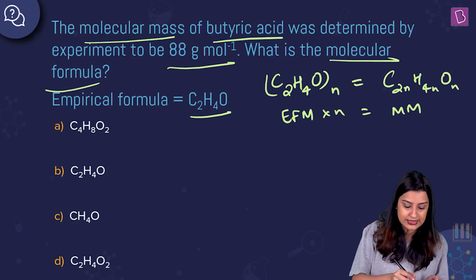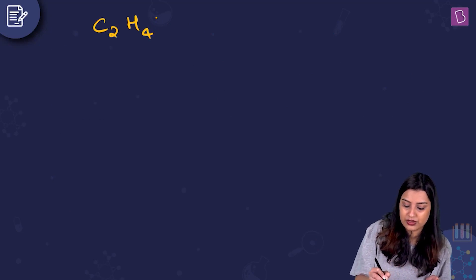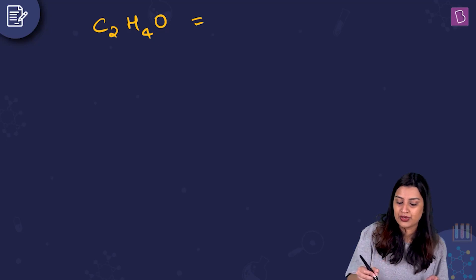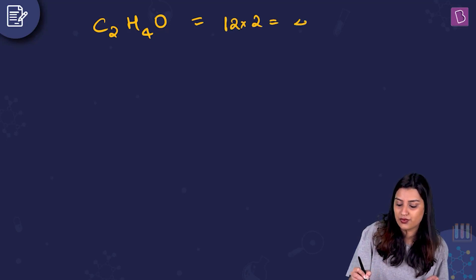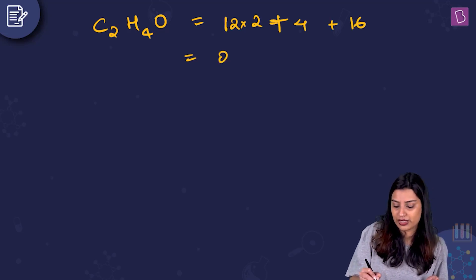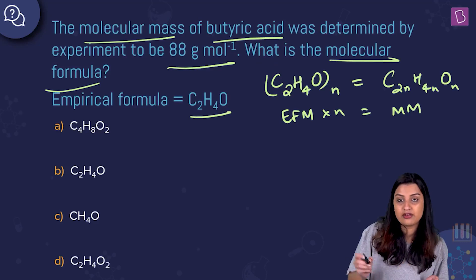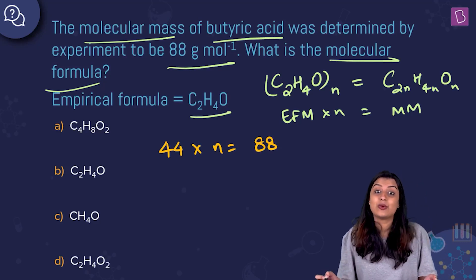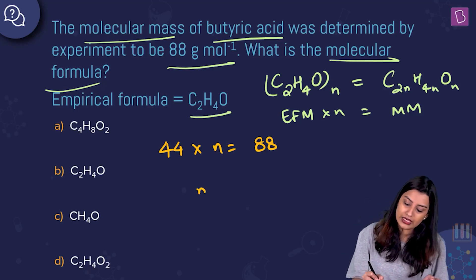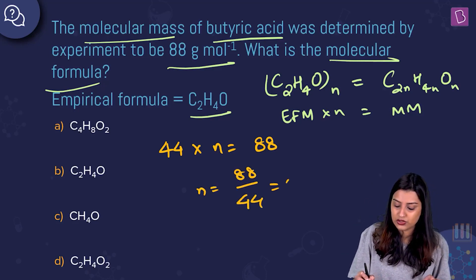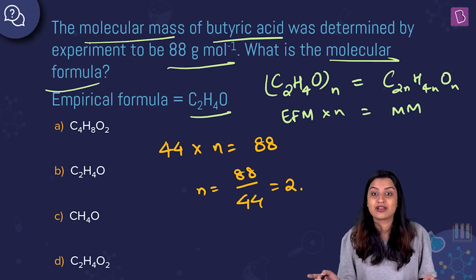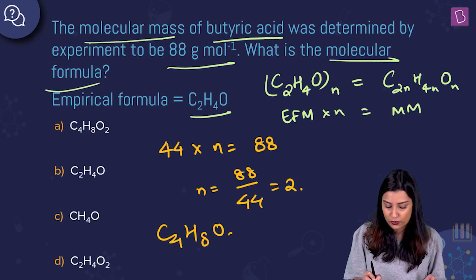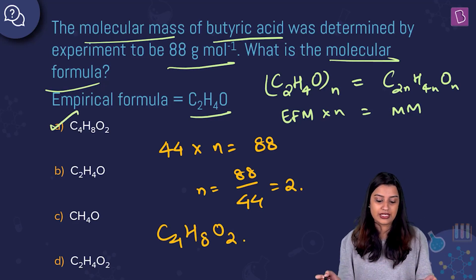We have C2H4O, so the mass of this entity is 12 times 2 for carbons plus 4 for hydrogens plus 16 for one oxygen, which is 24 plus 20, which is 44 grams. The empirical formula mass is 44, multiplied by n equals 88, the molecular mass given to us. So n is 88 by 44, which is 2. The final molecular formula is C4H8O2, which is option A.